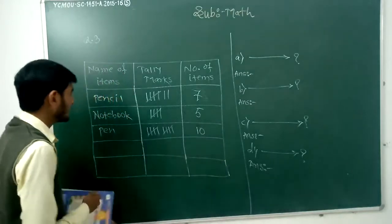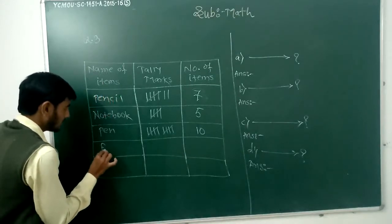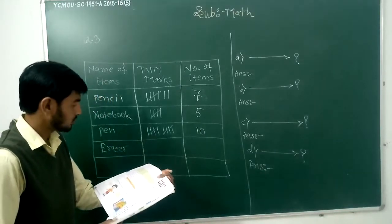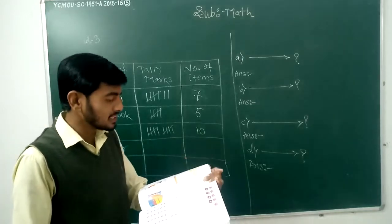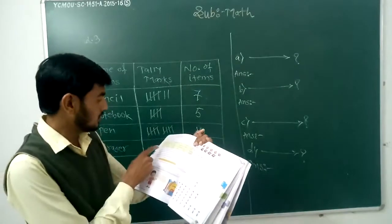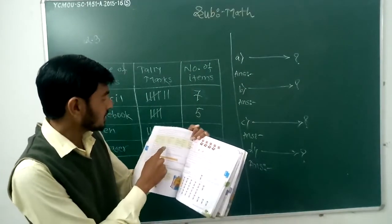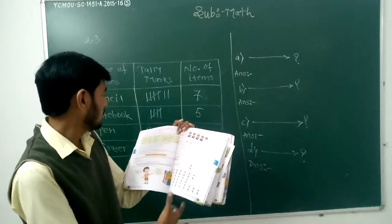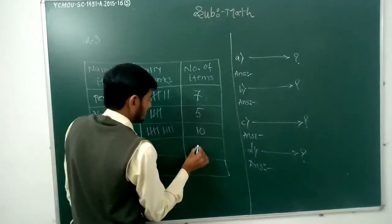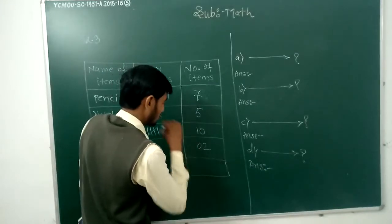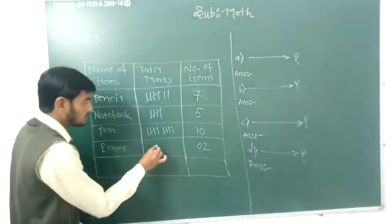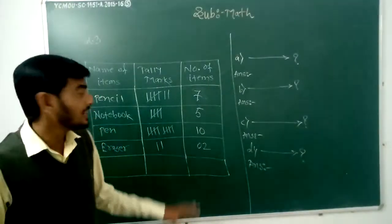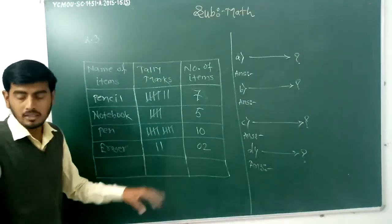Next stationery item is eraser — write down eraser. Count how many erasers were sold from the stationery. In the third column: 1, and in the last column: 2. So total 2 erasers sold. Write down the tally marks: 1 and 2. We collect the information from this table and write it in the tabular column.